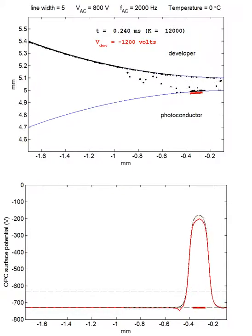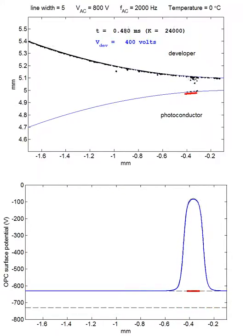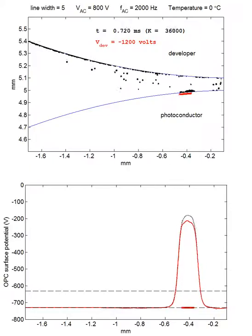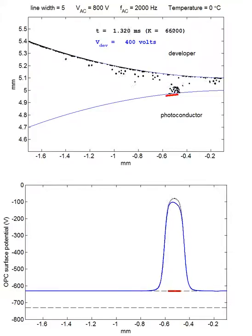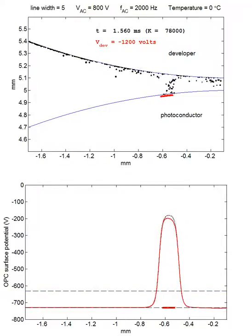The upper graph shows toner particles of various sizes and charges moving between a developer roller and a photoconductor drum, in response to an AC bias of 800 volts and 2 kHz, and a DC bias of minus 400 volts applied between the two rollers.